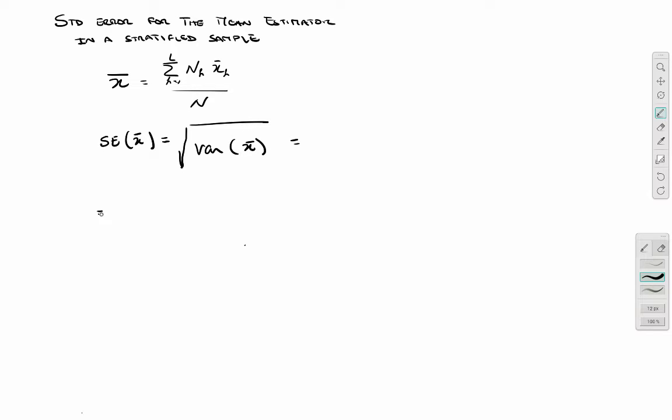And I'm going now to replace the X bar by its expression. But for convenience, I'm going to bring the capital N, the population size, to within this summation. So this is going to be the sum of NH, the stratum size, divided by population size times the estimator for the stratum H.